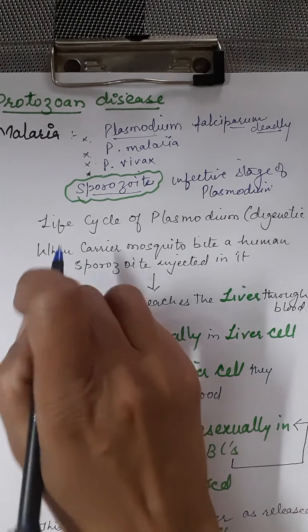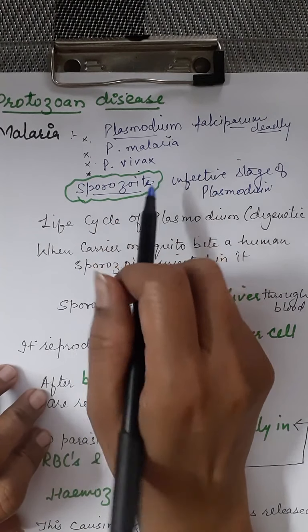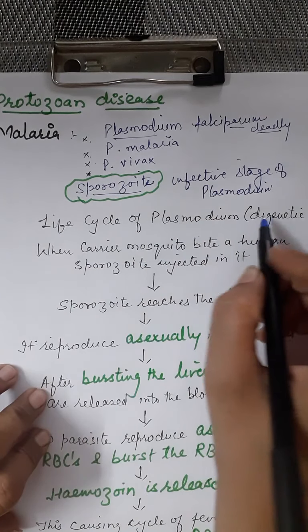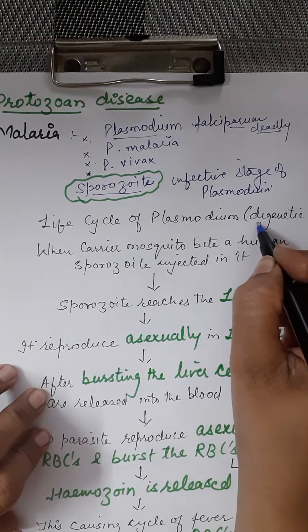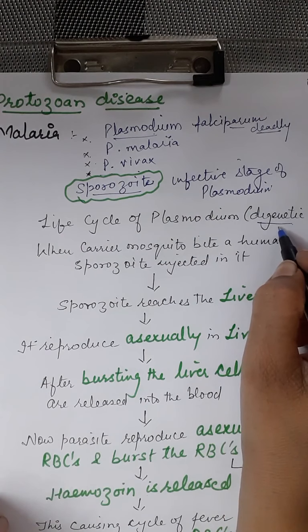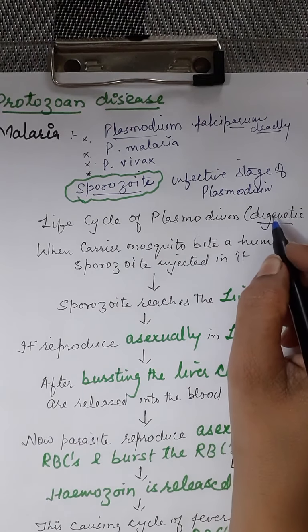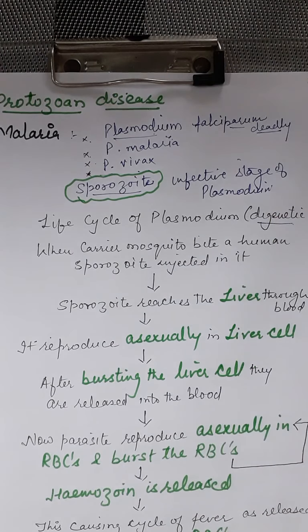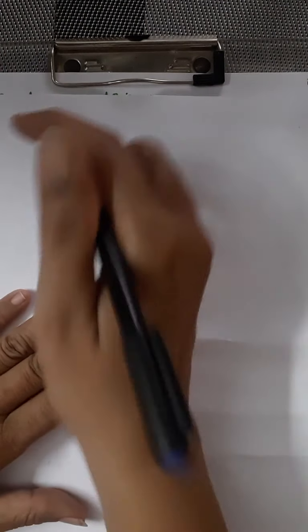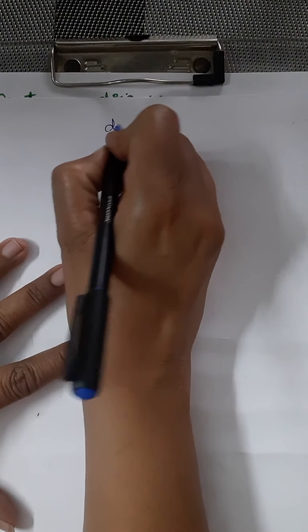Now we come to the life cycle of Plasmodium. The life cycle of Plasmodium is digenetic, which means it has two hosts.